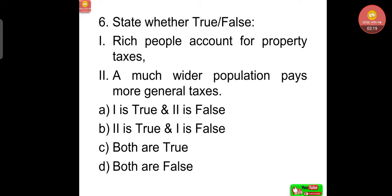Sixth question: state whether true or false. First, rich people account for property taxes. Second, a much wider population pays more general taxes. Option A: one is true and two is false. B: two is true and one is false. C: both are true. D: both are false. Answer: C, both are true.